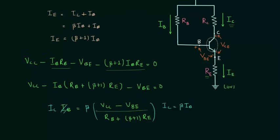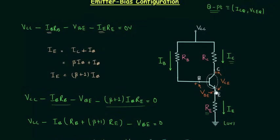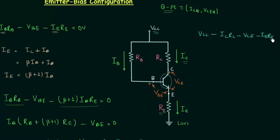The next step is calculating voltage VCE, for which we apply KVL in the output loop. We have: VCC minus IC·RC minus VCE minus IE·RE equals zero. Using this equation we can easily calculate voltage VCE.